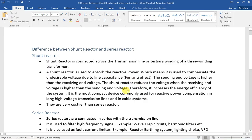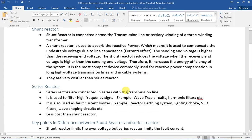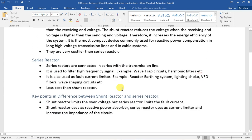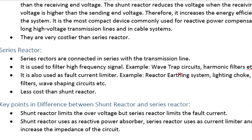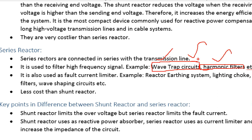If there is a cause where there is a line in parallel, we will have to use a series reactor. If there is a series reactor, we will also use a harmonic filter. We will already use the harmonic filter. We will also use the harmonic filter with the detector. There is a wave trap circuit.